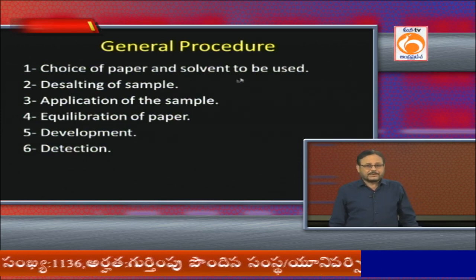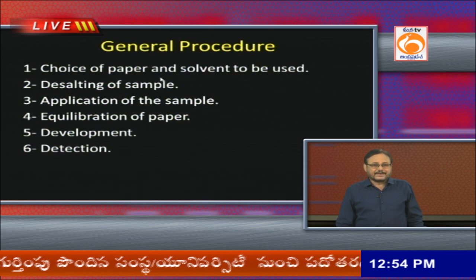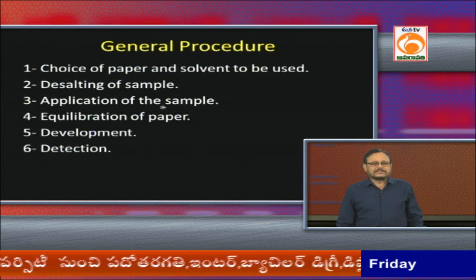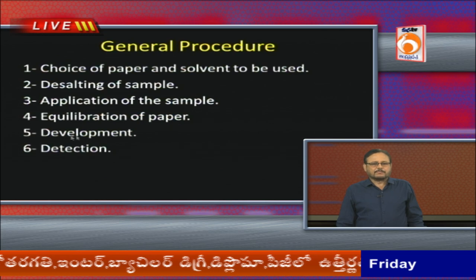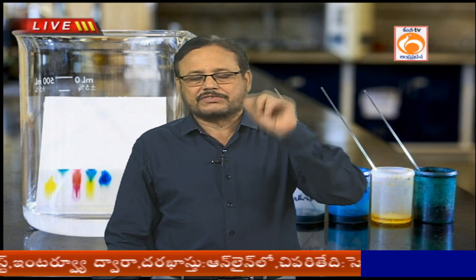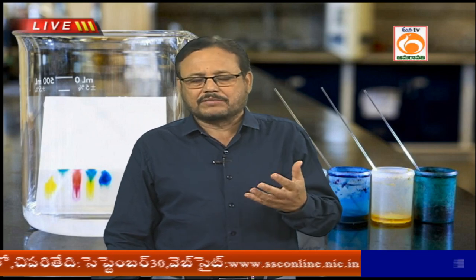Important considerations in paper chromatography include the choice of paper and solvent, desalting of sample, application of sample, equilibration of paper, development, and detection. For detection, the naked eye may not suffice — a UV chamber or iodine chamber is used to identify spots of certain amino acids and other compounds.